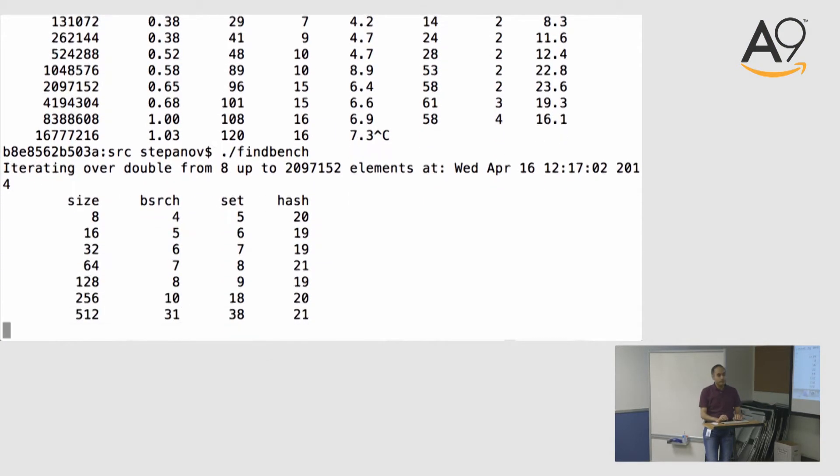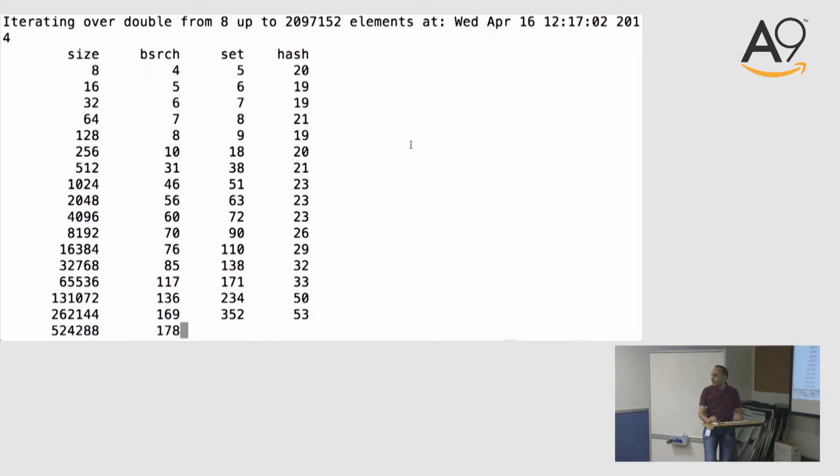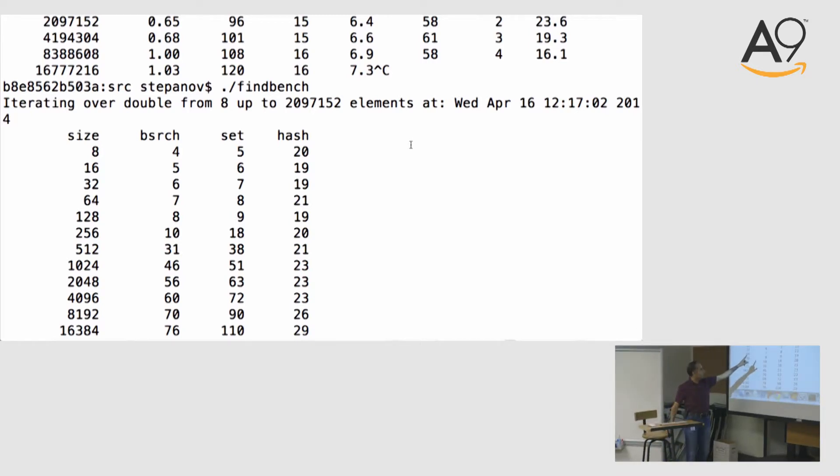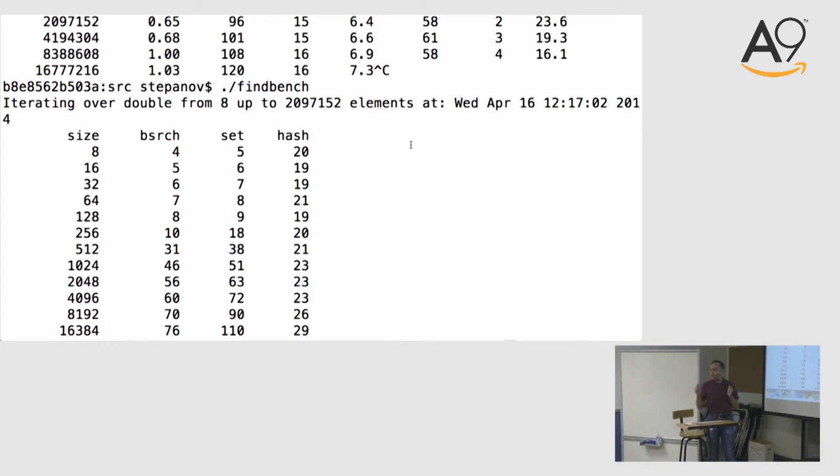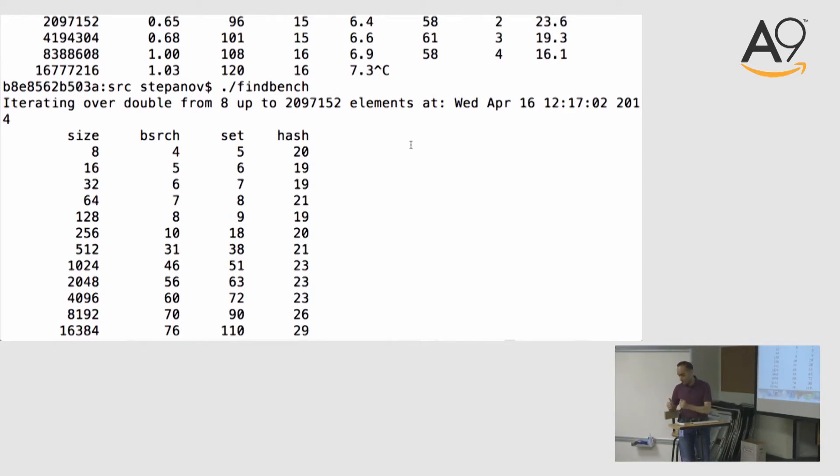This is just another set and hash related benchmark I want to show, which is here we are doing similar things with, we create a vector, a set and a hash of different sizes, and then we iterate over the elements of the array that we use to create these data structures, we find each element in them. So here we do a binary search, here we call set.find, here we call hash.find, and then what's in this table is average lookup time per element.